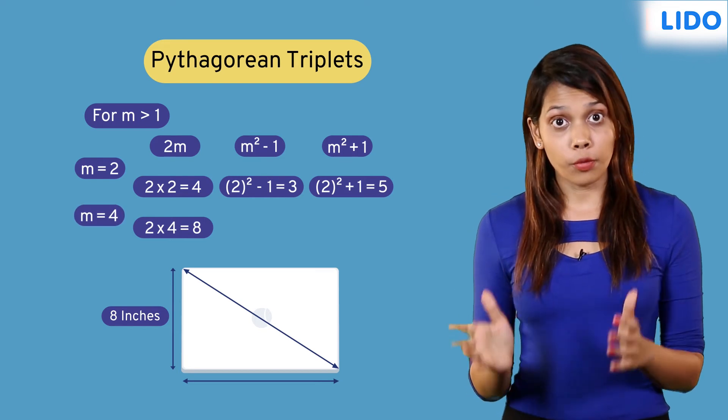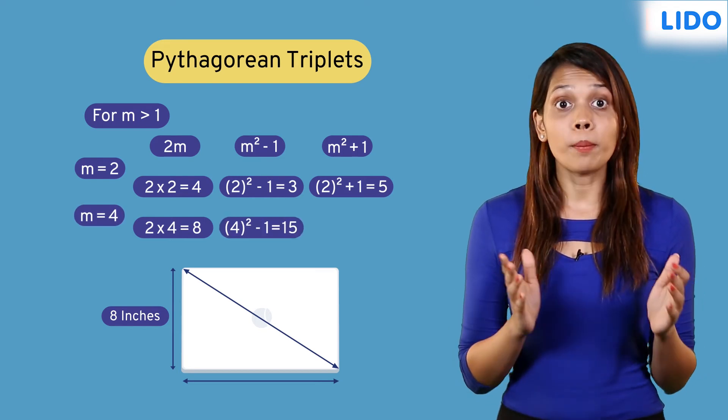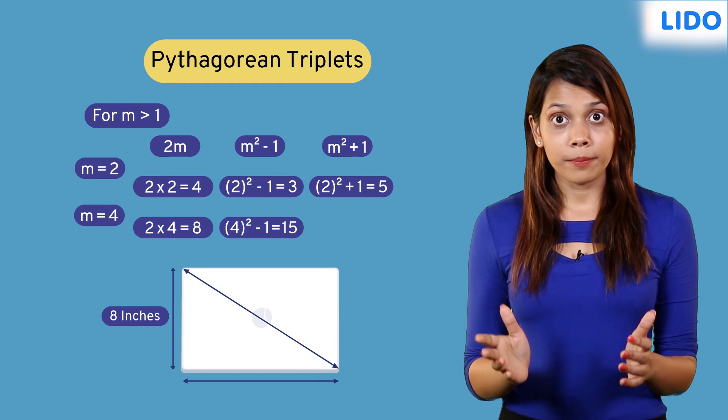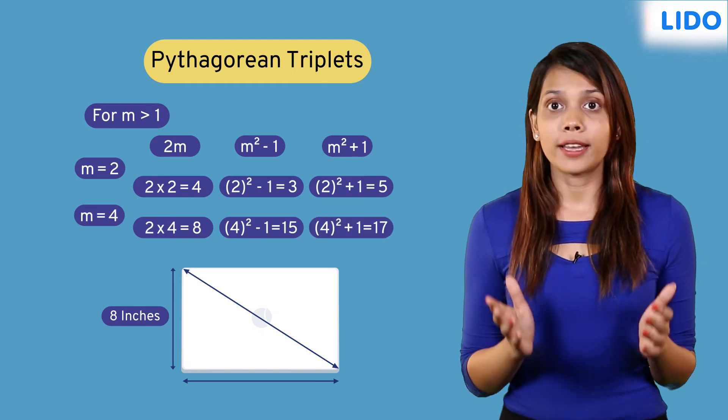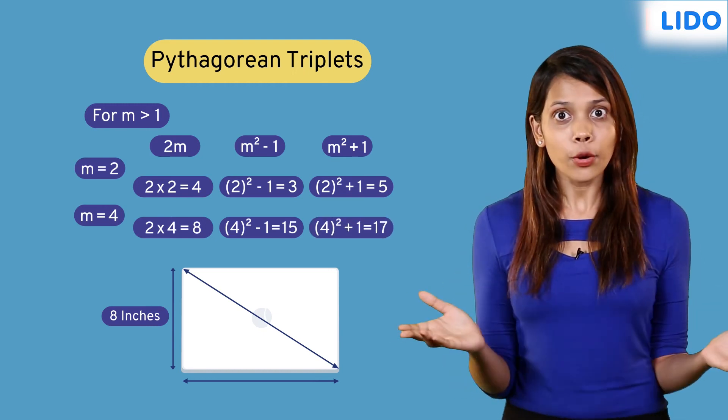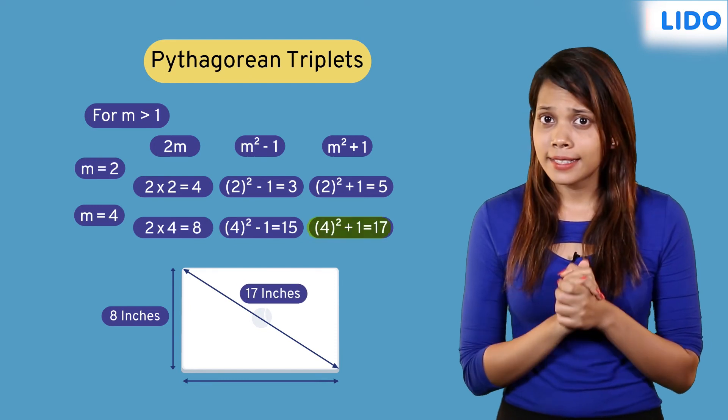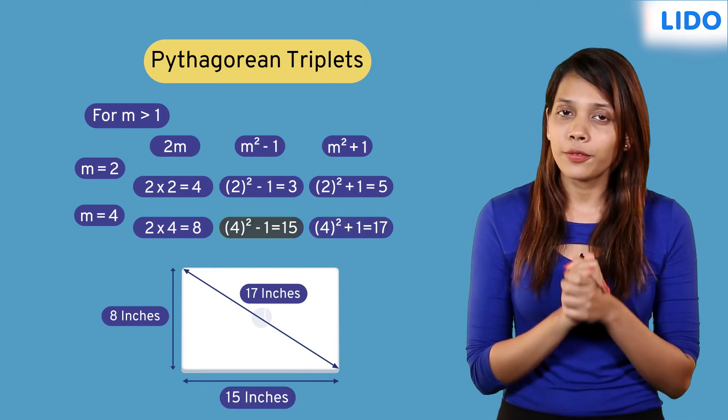So m equals 4, we get m²-1 equals 15 and m²+1 equals 17. There you go! The screen size is 17 inches and the width is 15 inches.